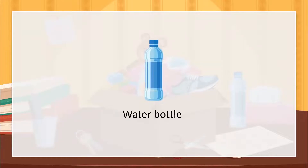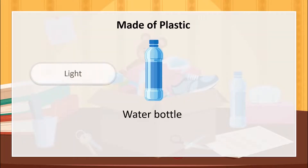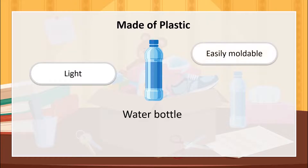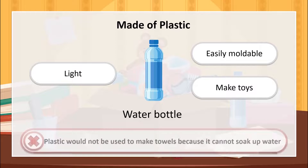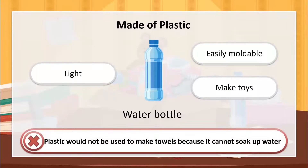This water bottle is made of plastic. Plastic is a waterproof material that is easily moldable, which is why it is used to make toys. However, it would not be used to make towels, because it cannot soak up water.